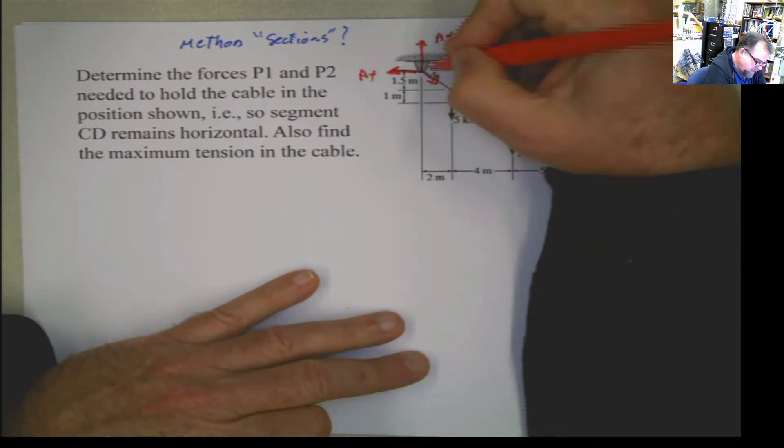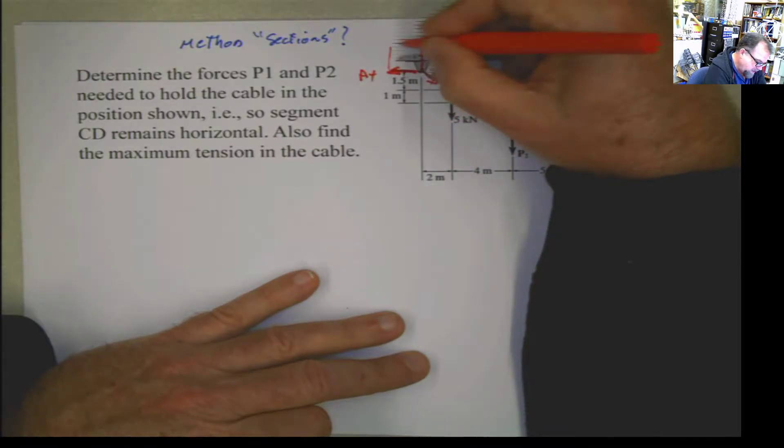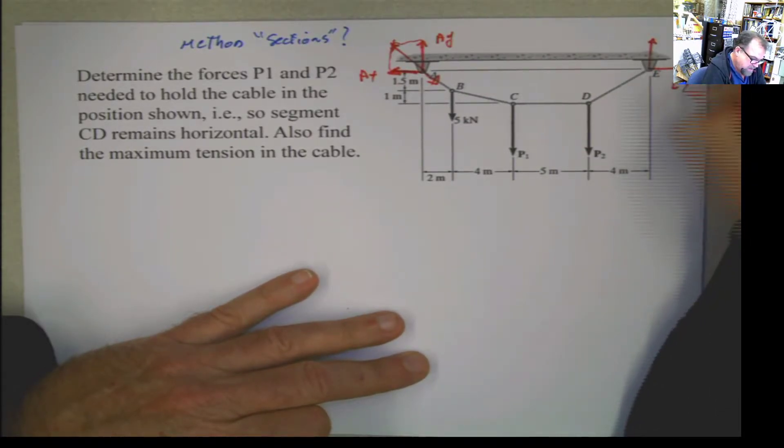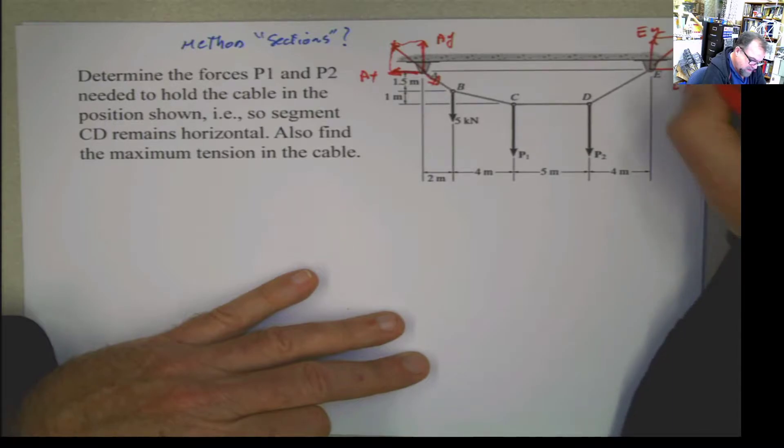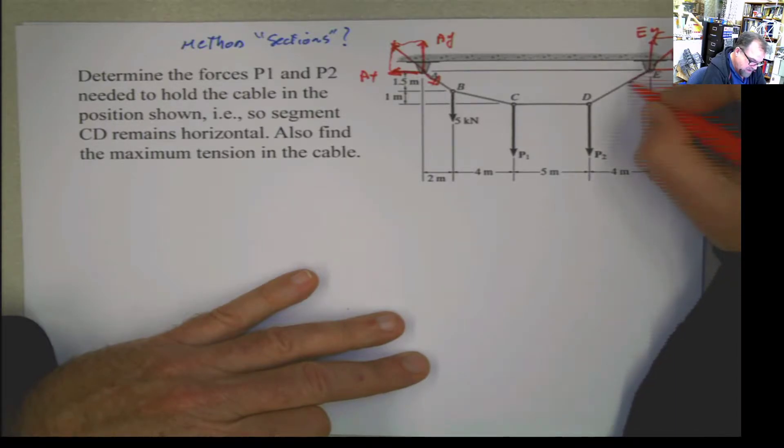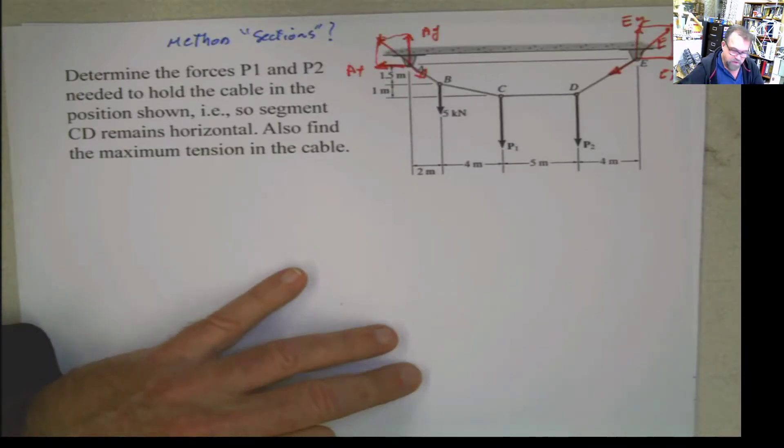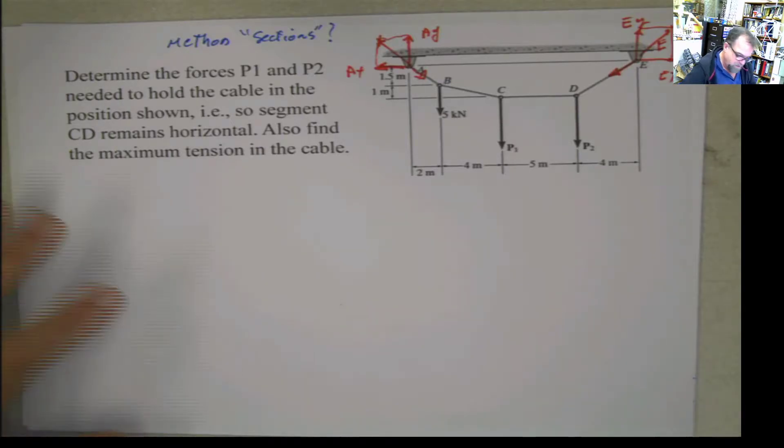If we combine these two reactions, what we're going to get is the same tension here. The same thing is going to happen here with EX and EY. If you combine them, that reaction E is going to be the same tension that is acting here. Let's take advantage of that by solving this problem.